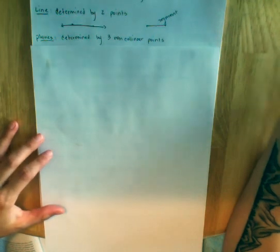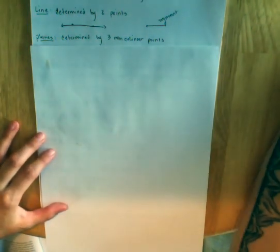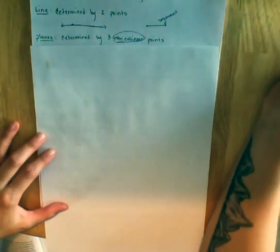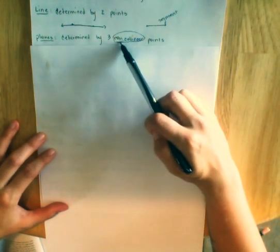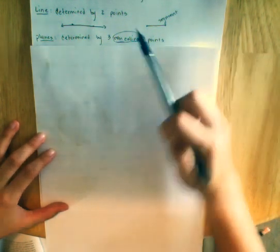A plane. Planes are determined by three non-collinear points. Non-collinear, this is a term that means that they are not in the same line. Collinear means in the same line.